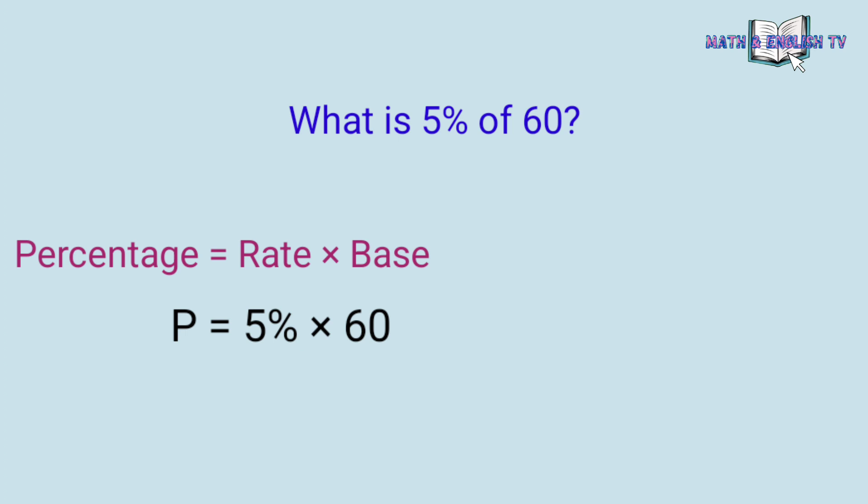Paano? So, aalisin lamang natin itong percent sign. At, imumove natin yung decimal point ng dalawang ulit pakaliwa. Ang 5, whole number siya. Kaya, wala kayong nakikitang decimal point. Kaya, magtatanong kayo, paano namin gagalawin yung decimal point? Wala namang decimal point. Ganito yan. Ang whole number, understood yan na ang decimal point ay nasa kanan.